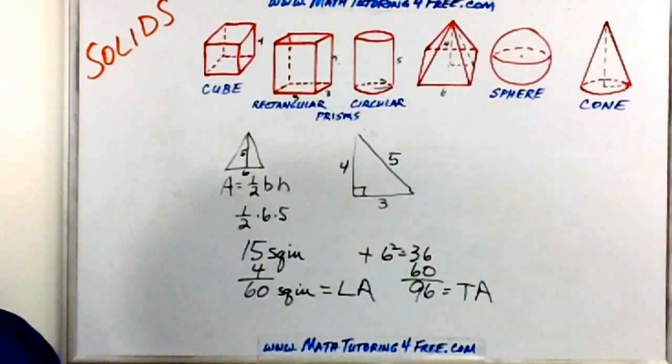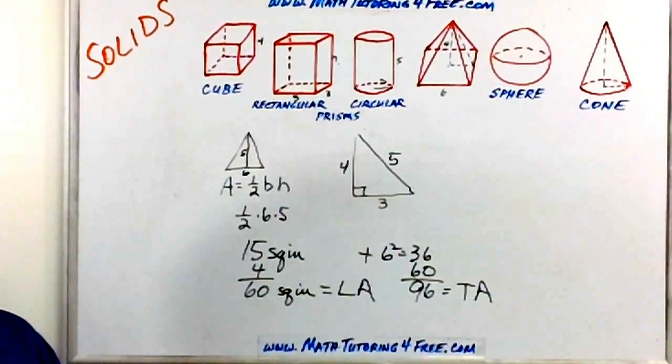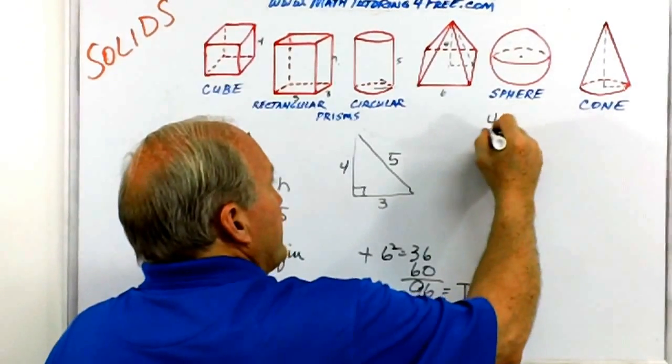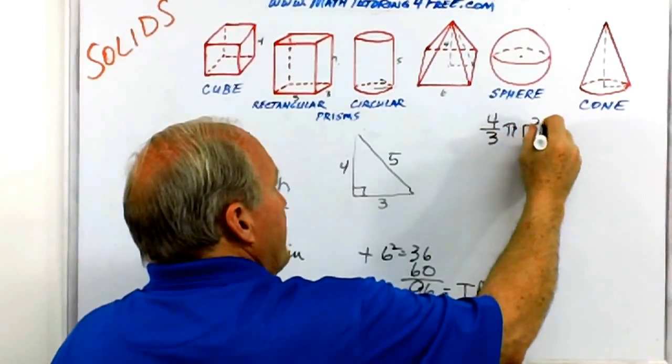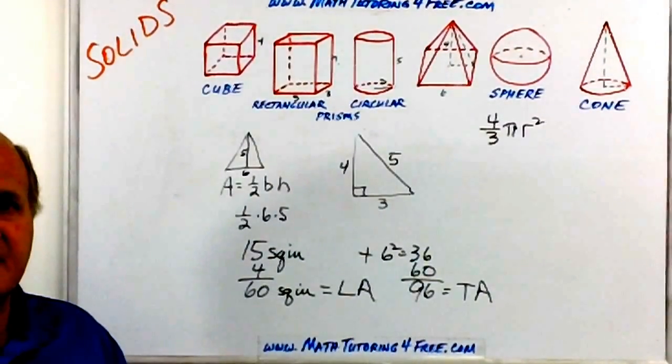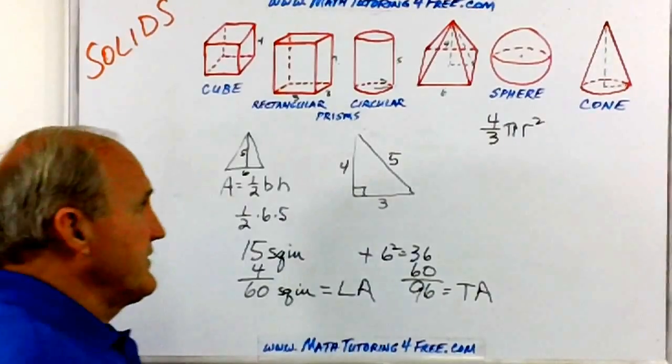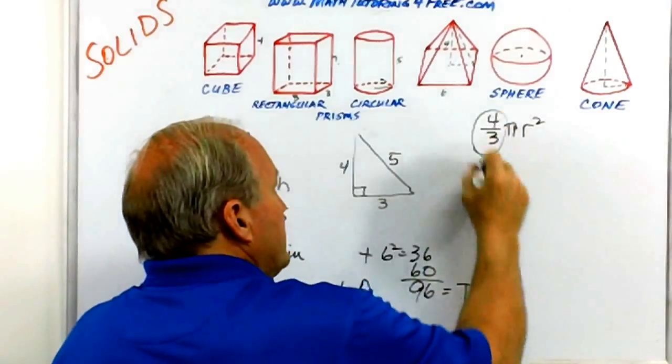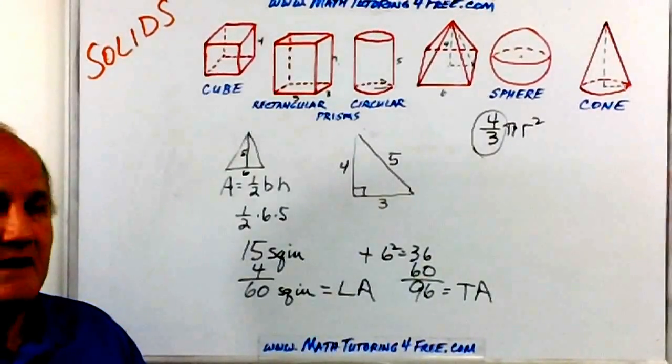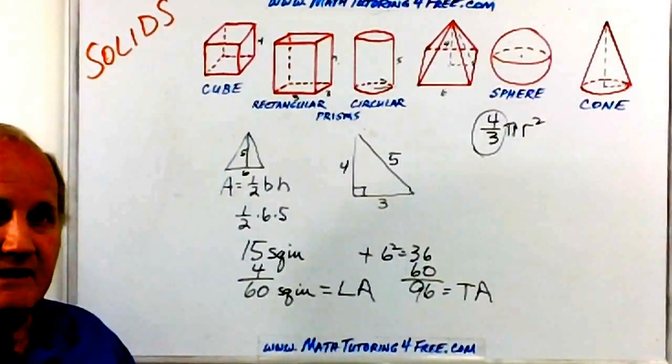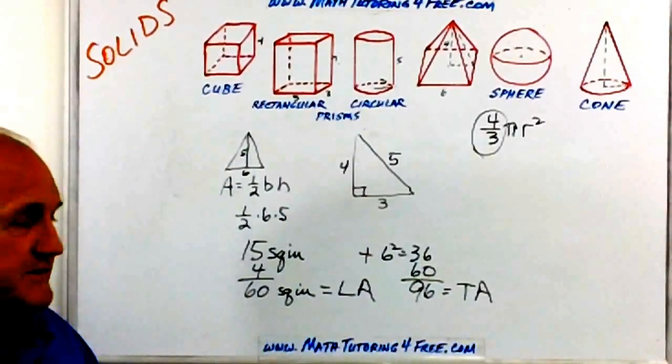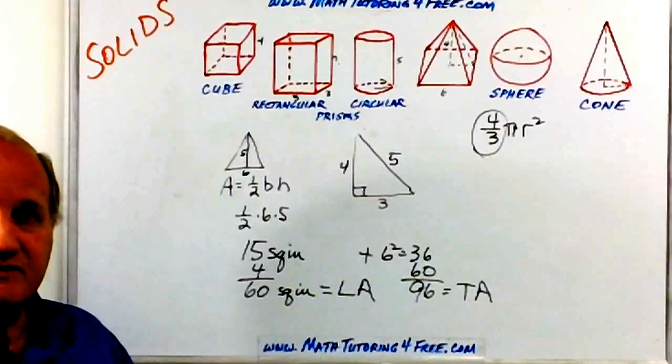Okay, sphere. I don't know any way to do it other than say, okay, the formula is four thirds pi r squared. Okay, pi r squared, I hope you recognize that as the area of a circle. And so the thing to remember here is the sphere is four thirds of it. Okay. And just kind of lock that formula in your head. I know you've got a lot of formulas to remember, but a sphere is four thirds of a circle.